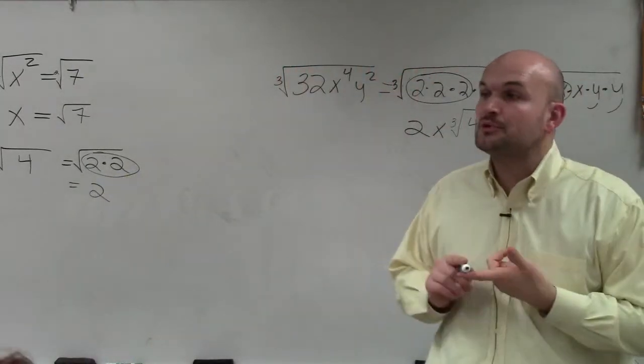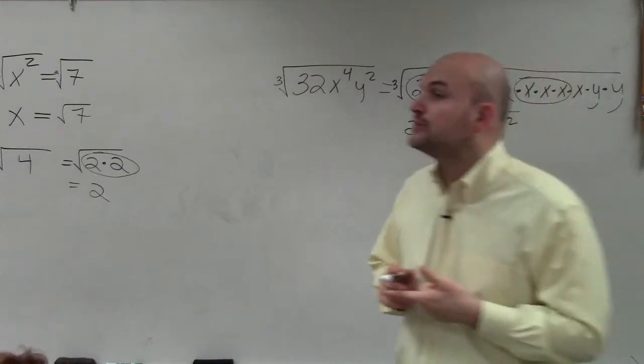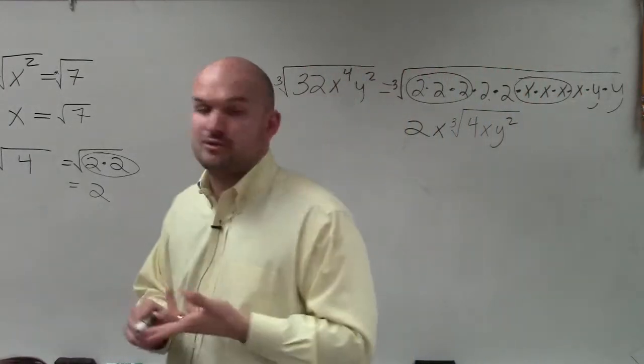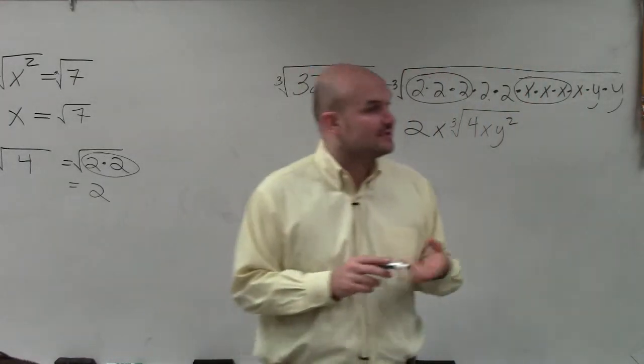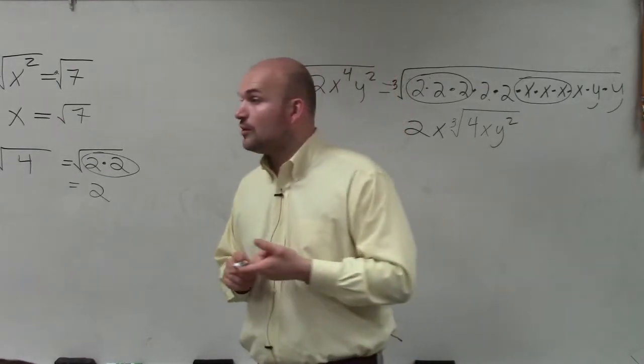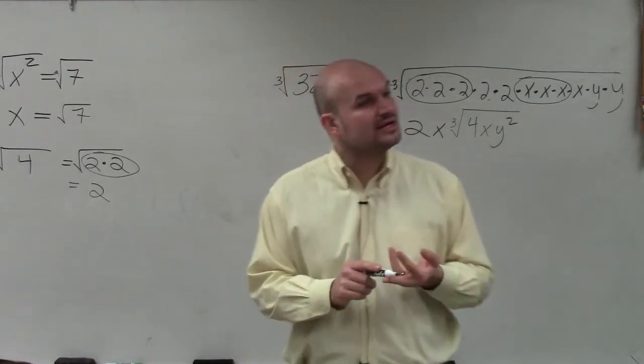Well, you can take the cube root of 8. The cube root of 8 is 2. You can take the cube root of 27. The cube root of 27 is 3. 3 times 3 times 3 is 27. You can take the cube root of 64. 4 times 4 times 4 is 64.